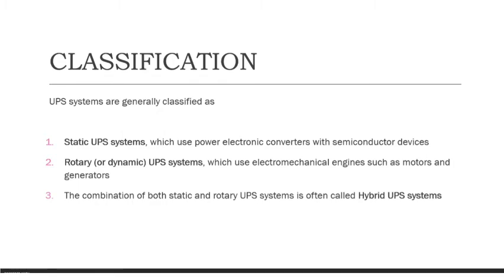UPS can be classified into three main categories: static UPS, dynamic or rotary UPS, and hybrid UPS. Static UPS uses power electronic converters with semiconductor devices. Dynamic UPS uses electromechanical engines such as motors and generators. Hybrid UPS is a combination of static and dynamic.